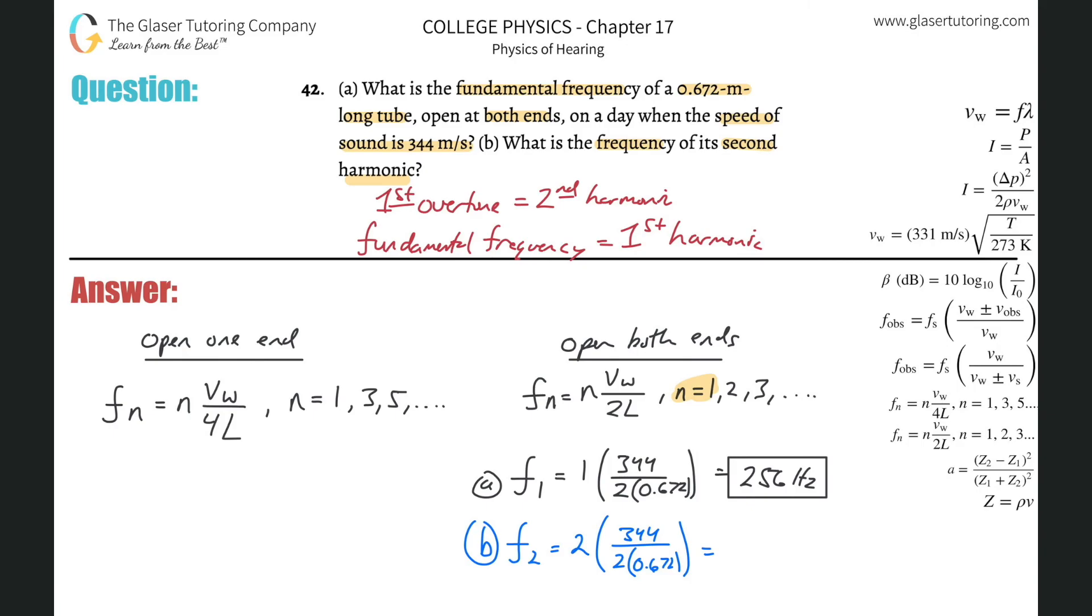And what do we get? So it's basically just going to be that prior answer multiplied by two. So it's about 512 Hertz. Easy peasy.